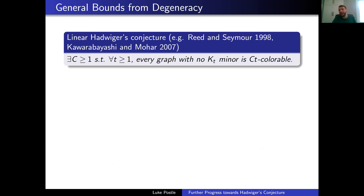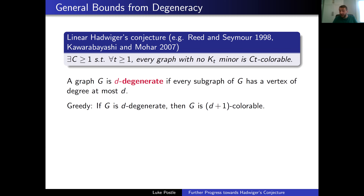Maybe we could ask for weakenings. Instead of proving Hadwiger's for more t, what can we prove about the chromatic number when you forbid a Kt minor? One direction: let's not hope for exactly t, but just ask for a linear relation. This linear Hadwiger's conjecture was made by Reed and Seymour in '98 and reiterated by Karabayashi-Moore in '07: is there some constant c so every graph with no Kt minor is ct-colorable? That would be very nice to prove, even if c were gigantic — but even this is still open.